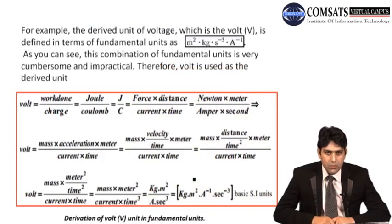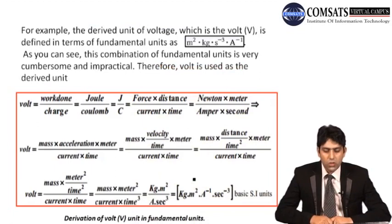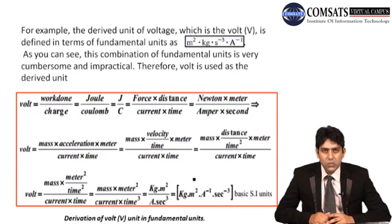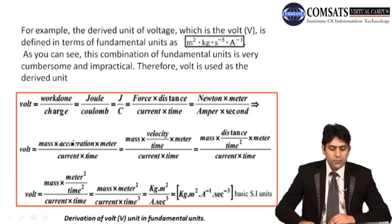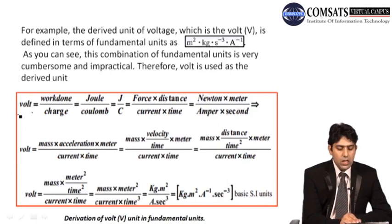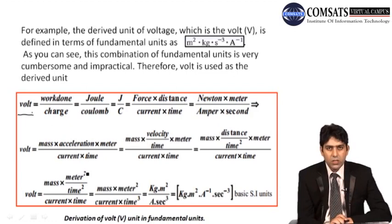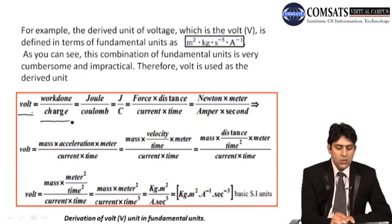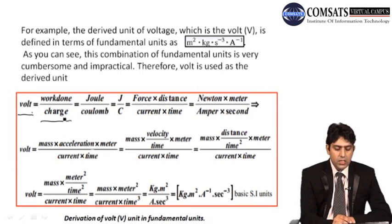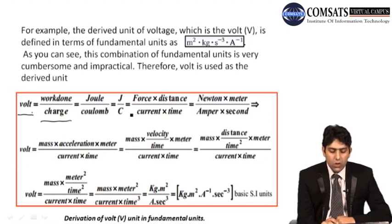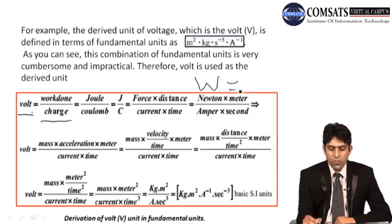Voltage is a derived unit — it is not a fundamental unit. If we represent voltage, whose unit is the volt, in terms of fundamental units, we can derive it. We know that volt equals work done per charge. Work done per charge: the unit of work done is Joules, and the unit of charge is Coulombs. We also know that W equals force times distance, and that current i equals charge q divided by time t, so q equals i times t.